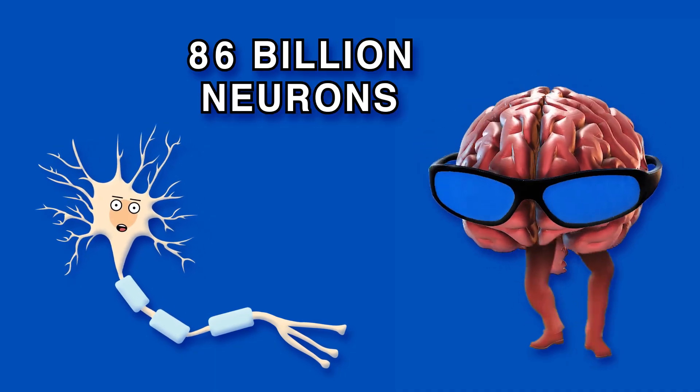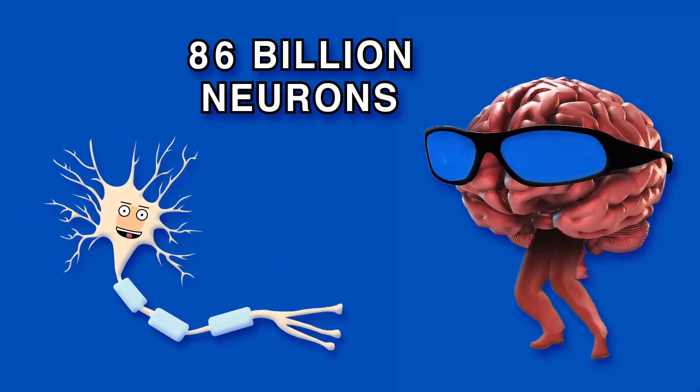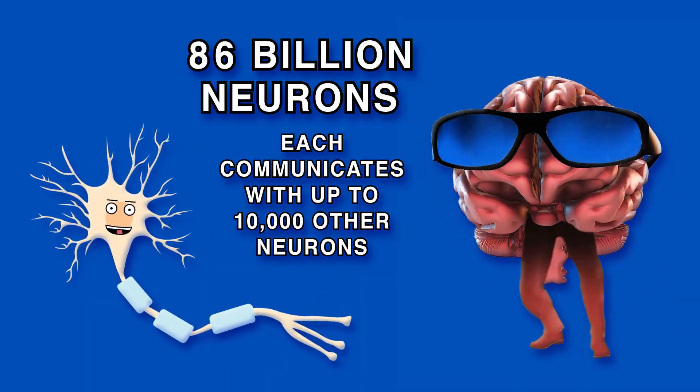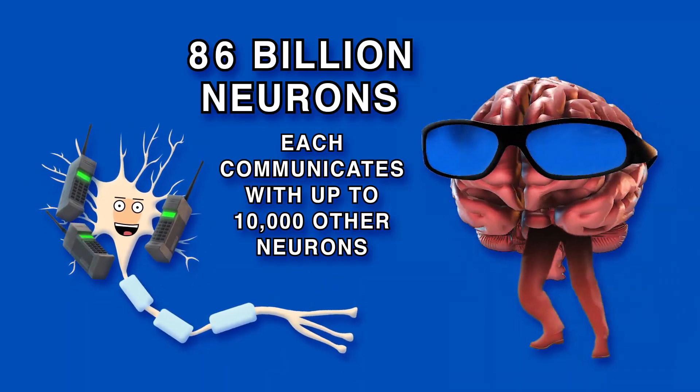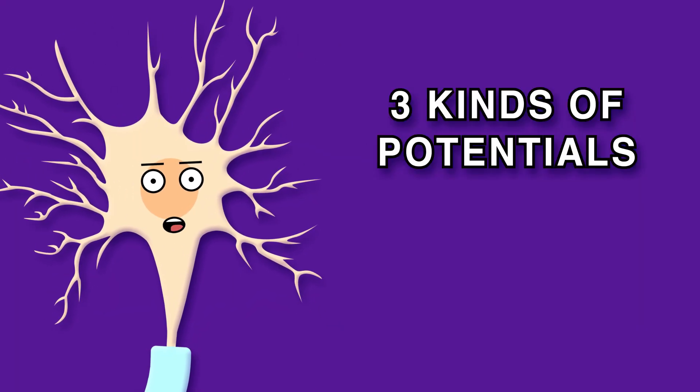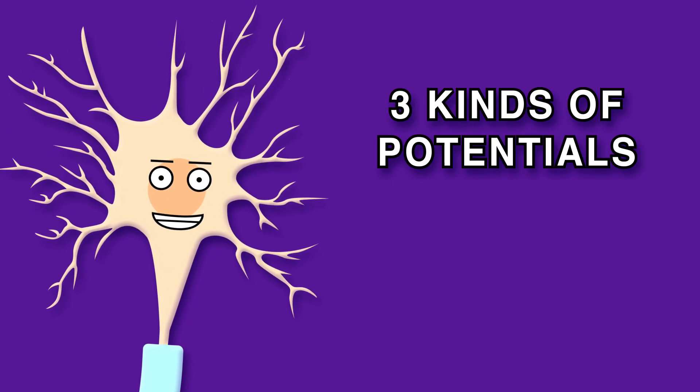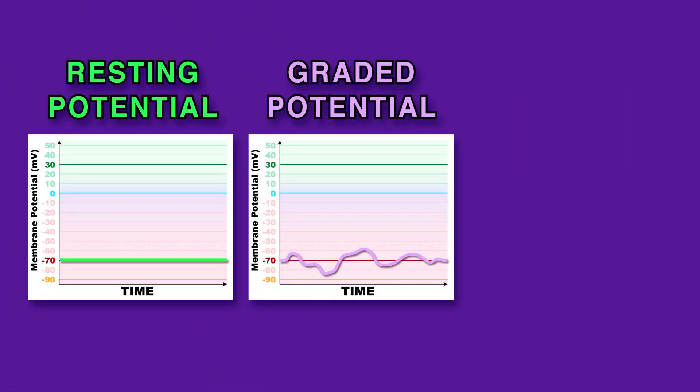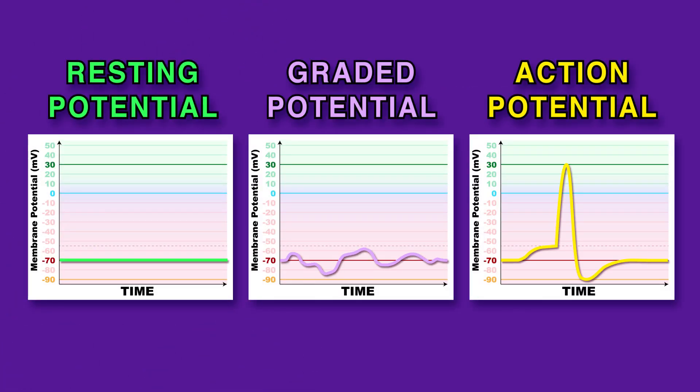You have 86 billion neurons, according to estimates, and each with 10,000 other neurons communicates. Three kinds of potentials for neuron communication are essential. These are the resting, graded, and the action potential.